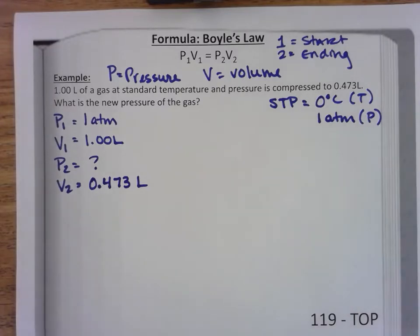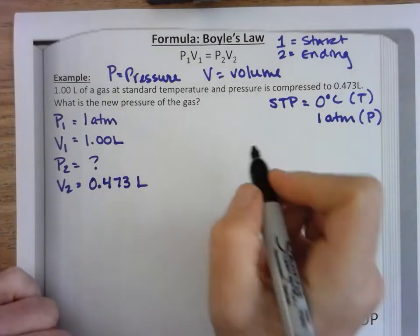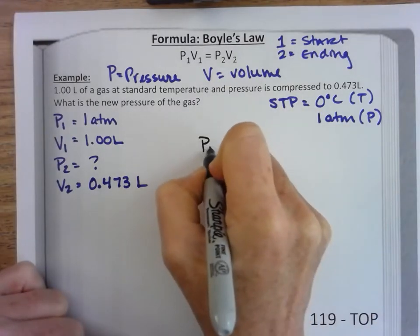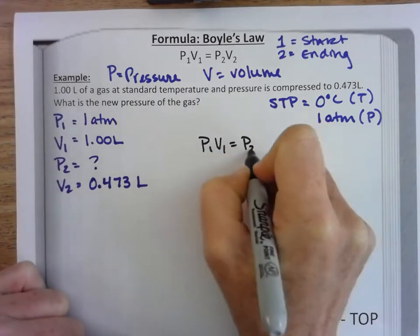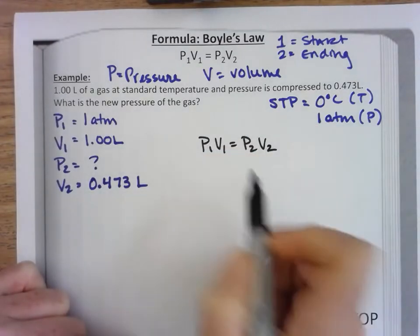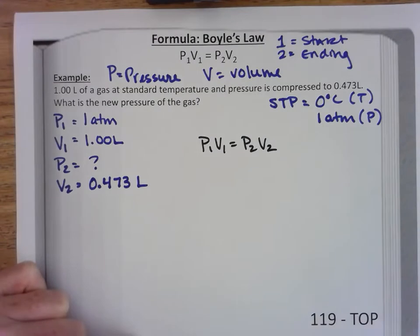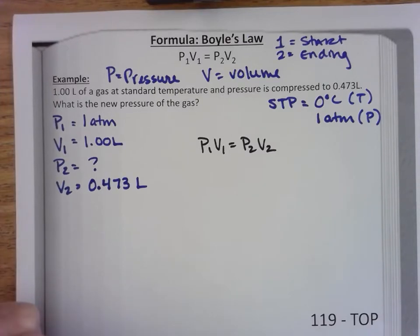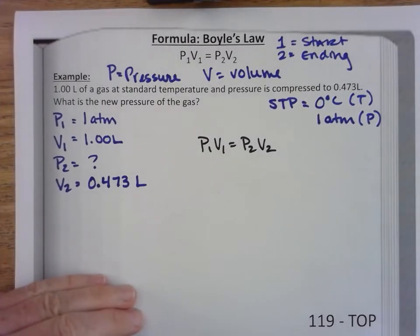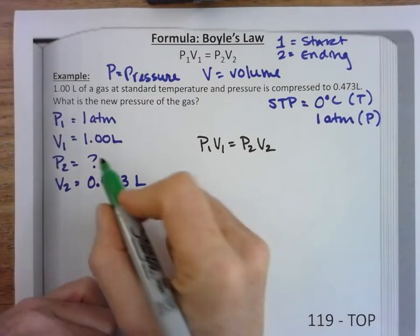I'm going to take my formula and I'm going to rewrite it: p1v1 is equal to p2v2. When there's no arithmetic between these it's multiplied, it's understood that it's multiplied. The best thing to do is rearrange this while it's in this format because there's less to move around.